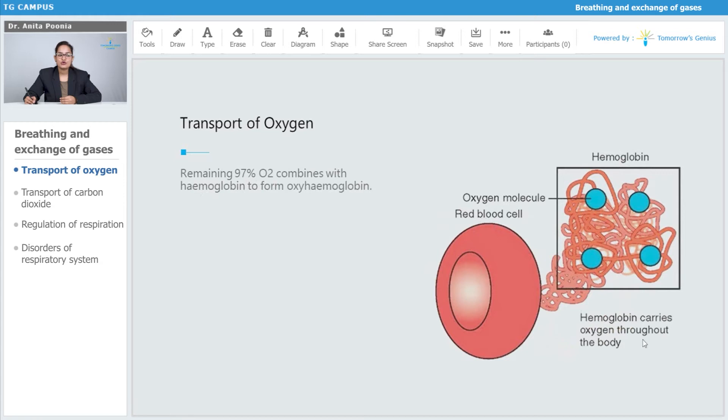Hemoglobin carries oxygen through the body. Now, one molecule of hemoglobin combines with four molecules of oxygen. So you see, one molecule of hemoglobin will combine with four molecules of oxygen.